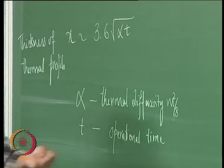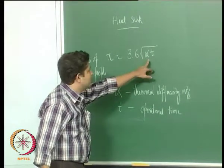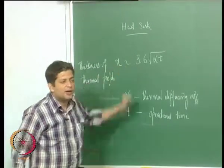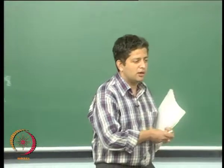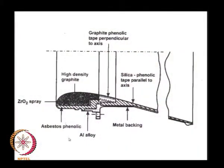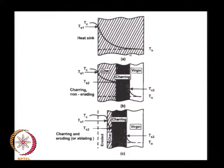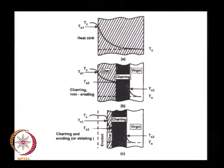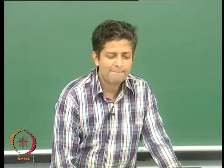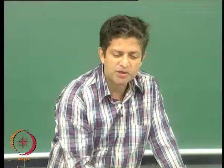The required thickness also depends on what is the allowable temperature T0 on the other side — that is, the temperature that the metal or asbestos phenolic backup material can tolerate. Depending on that allowable temperature, you can choose the thickness of the throat region made of high density graphite.